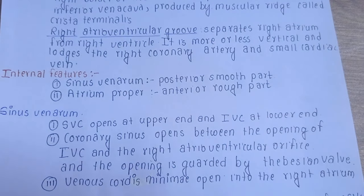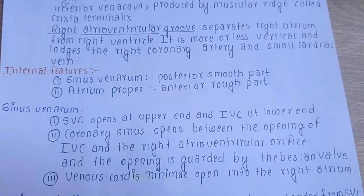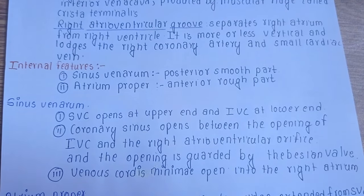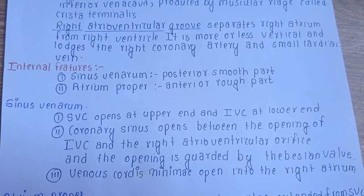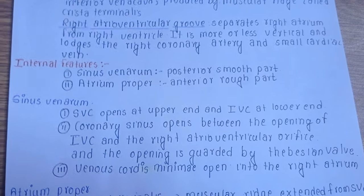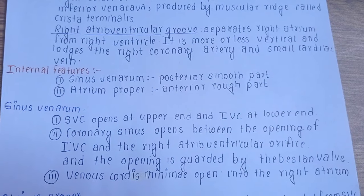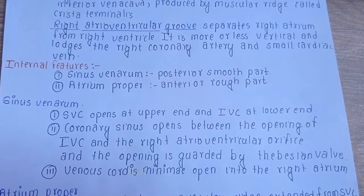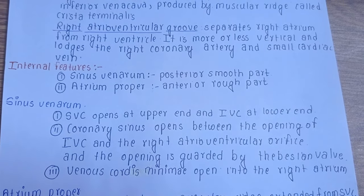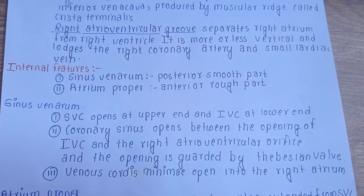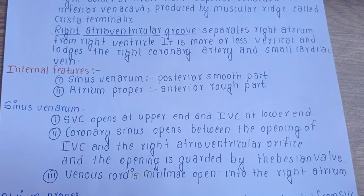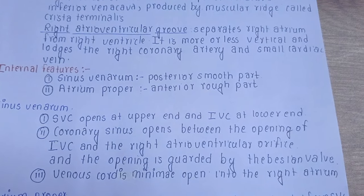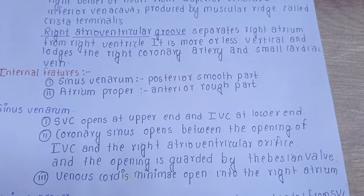Let's discuss the sinus venarum, the posterior smooth part. The superior vena cava opens at the upper end and the inferior vena cava opens at the lower end of the sinus venarum. Similarly, the coronary sinus opens between the opening of the inferior vena cava and the right atrioventricular orifice, and this opening is guarded by the Thebesian valve.